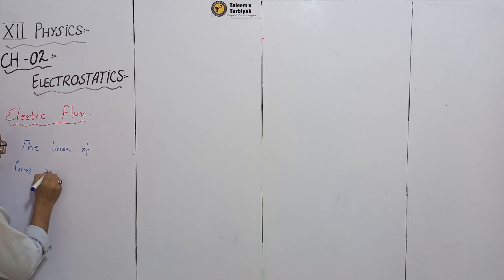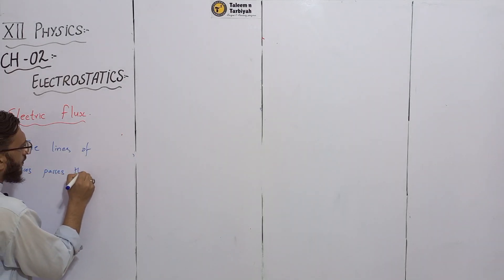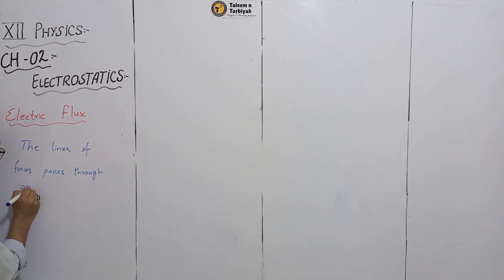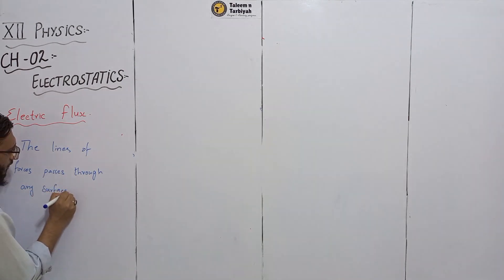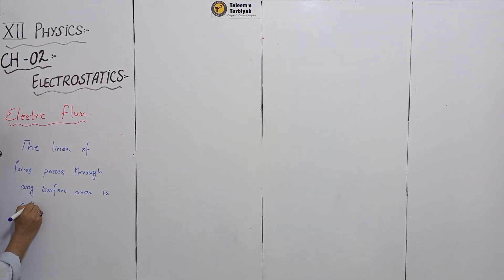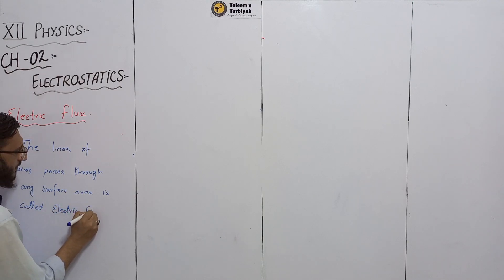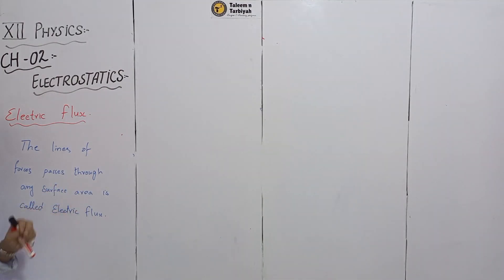The line of forces that passes through any surface area is called electric flux.